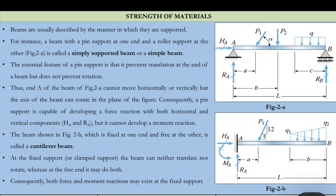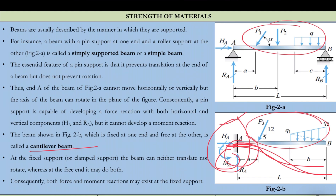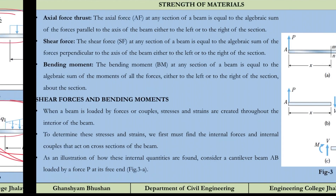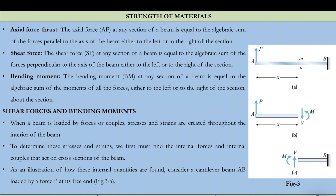A beam fixed at one end and free at the other is called a cantilever beam. This is the general loading condition — inclined loads and uniformly varying loads can be present. The property of a fixed support is that it can have a reactive moment, shown as M_A, which means the beam cannot rotate at that end. If a load is applied, the beam will bend but no rotation is possible at the fixed end.